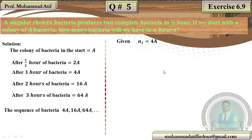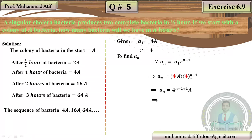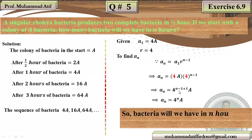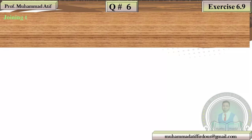We have A1 = 4A, R = 4. Using the geometric progression formula A_N = A1 × R^(N−1), replacing the values of R and A1, we get the answer: A × 2^(2N), giving us the number of bacteria after N hours. This completes question number 5.